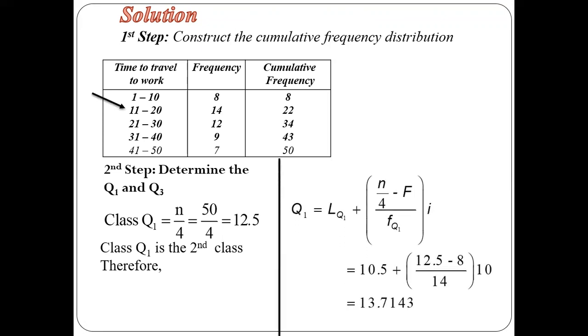So if we substitute this in our data, we have that our capital F is 8. We have that our F_Q1 is 14, the frequency of the lower quartile. From there, we obtain 18.7143. We move now to the upper quartile.